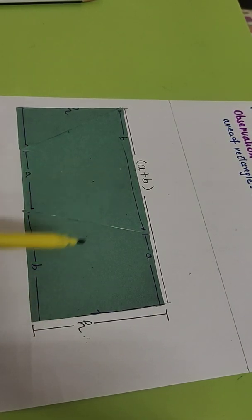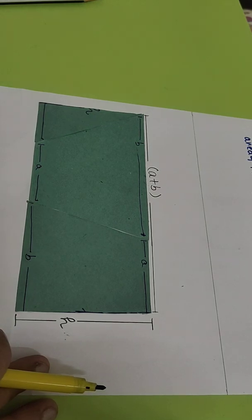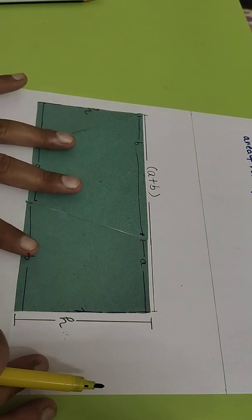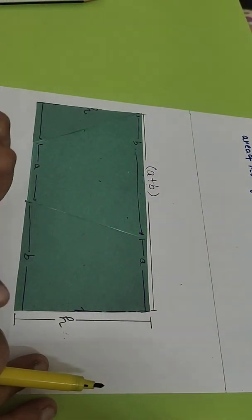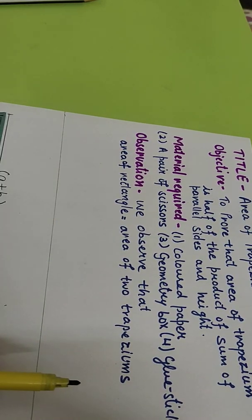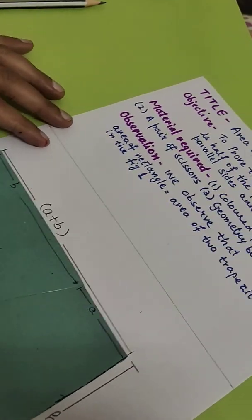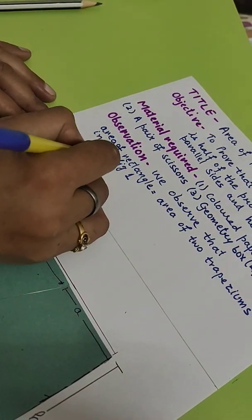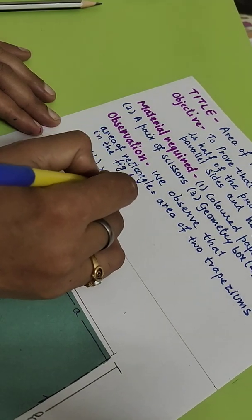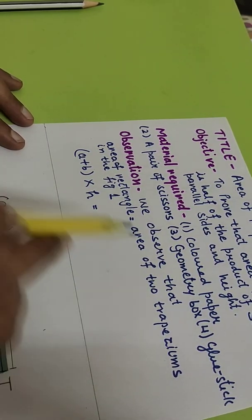What you observe here is that the area of this rectangle equals the area of the two congruent trapeziums we used. So: area of rectangle = area of two trapeziums. The area of the rectangle is (a + b) × h, and this equals the area of two trapeziums.